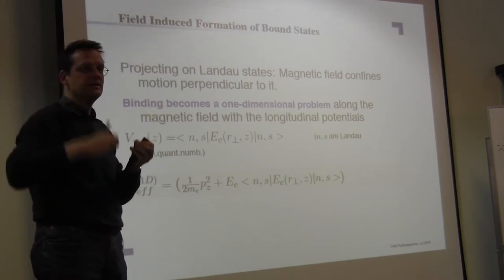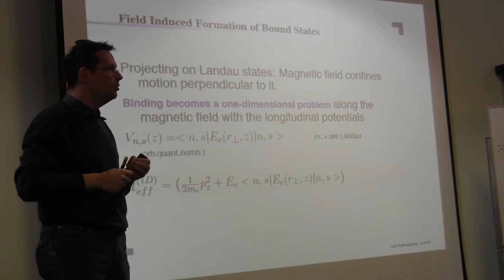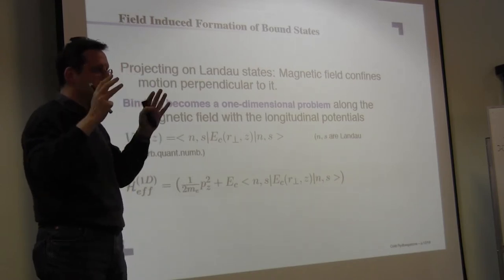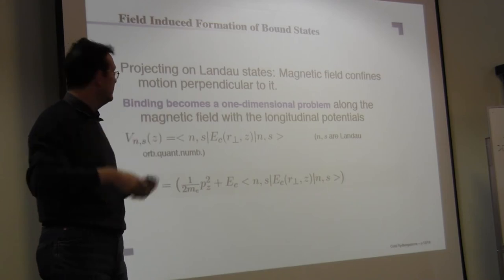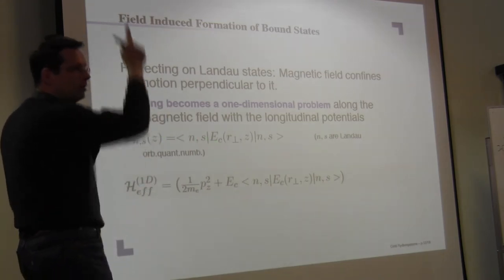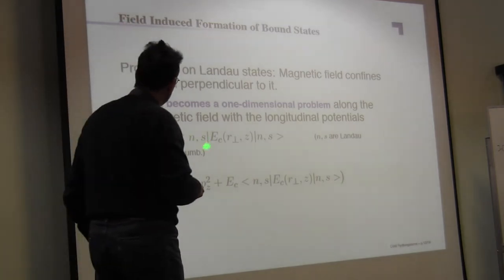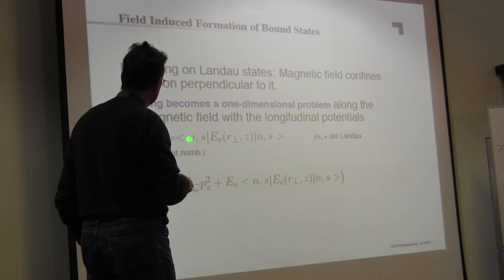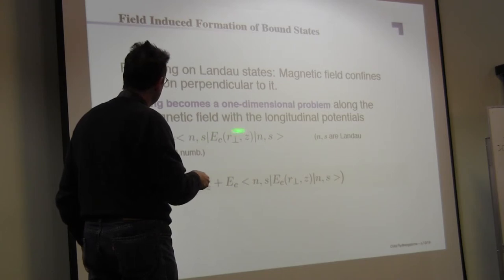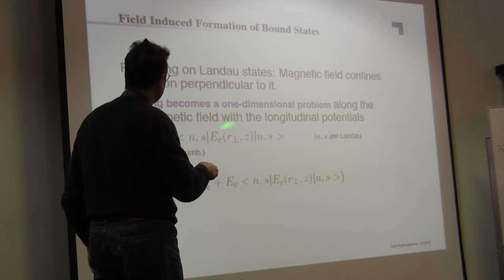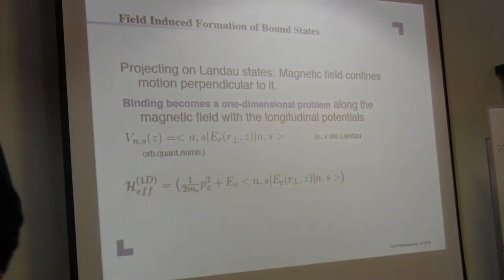This outer electron can occupy these Landau orbitals. Now if you make an adiabatic approach, again assuming that your potential along the motion along the magnetic field axis is given by the projection of the Landau orbitals, which is the NS, the principal Landau quantum number and angular momentum quantum number, the projection of these states or the expectation value in these states of that energy EC, which is the polarization potential essentially, then you get an effective potential along the Z direction.